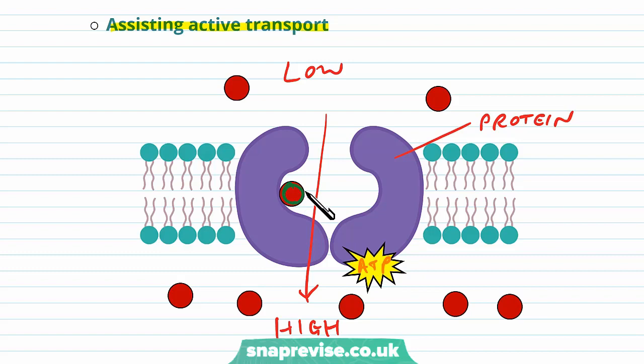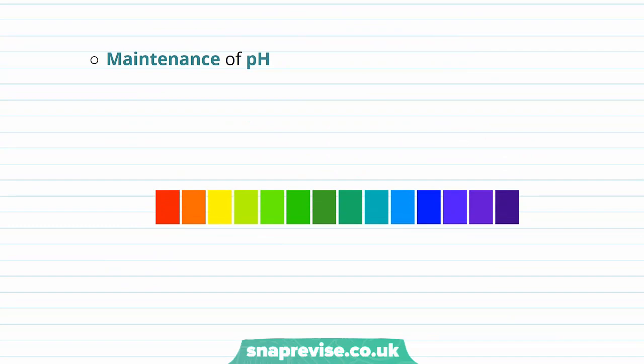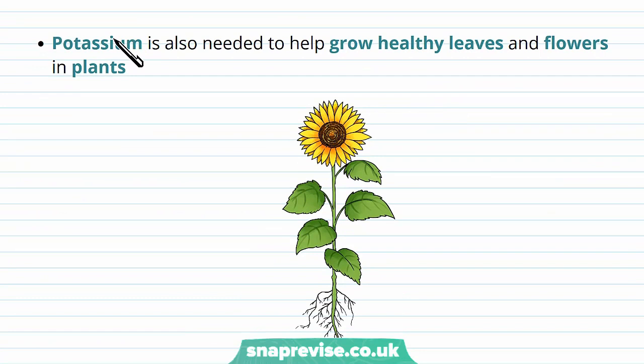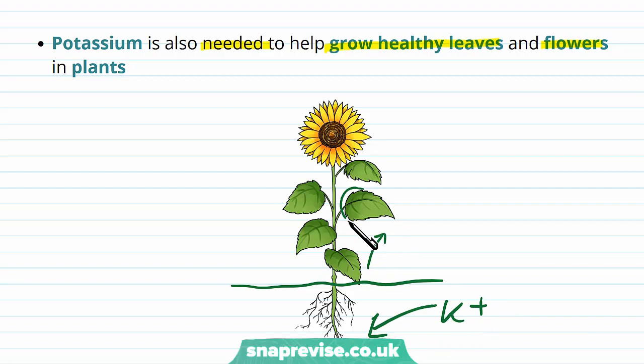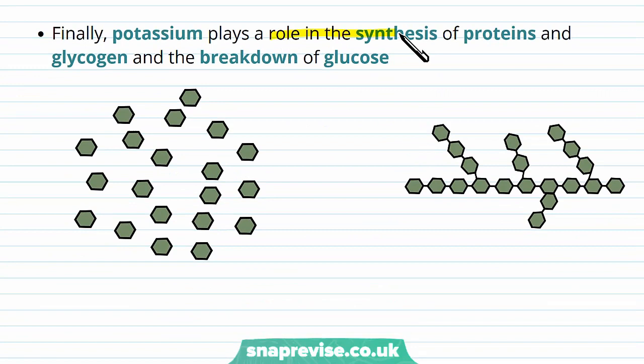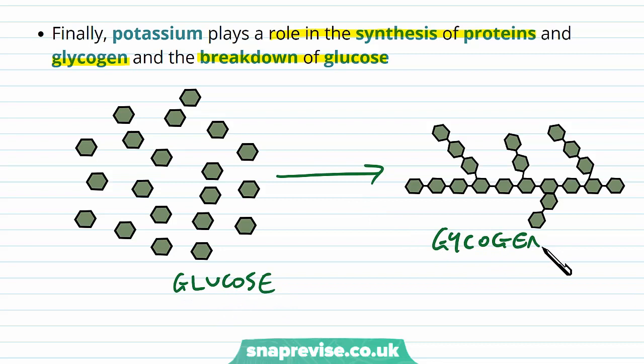Just like sodium, potassium has a role in maintaining the pH of the body, which should be maintained around 7. Potassium is also needed by plants to help grow healthy leaves and flowers so they can function properly, and plants often absorb potassium from the soil. Potassium also plays a role in synthesizing proteins and glycogen — in forming glycogen, individual glucose molecules are joined into a polymer polysaccharide using potassium ions in various enzyme reactions — and it's also used in breaking down glucose in respiration.